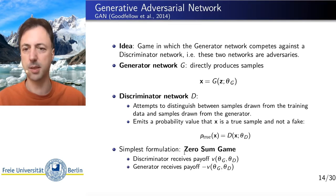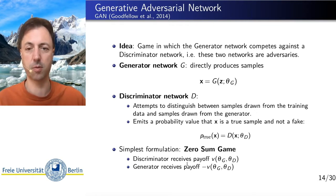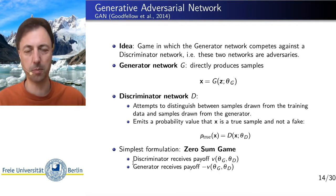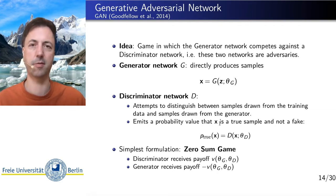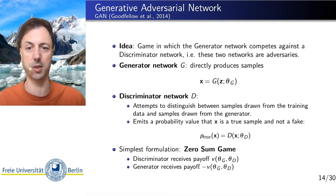In the simplest formulation, these two networks play a zero-sum game. We define a payoff function, and whenever the discriminator does a good job in making the right call — whether we have a true sample or a fake sample — the discriminator receives a payoff and the generator receives minus that payoff. So the discriminator gets a reward, the generator gets a penalty, or vice versa. It's a zero-sum game — only one of the two can win.